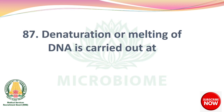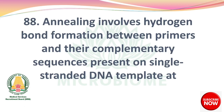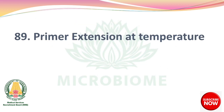Denaturation or melting of DNA is carried out at 90 to 94 degrees Celsius. Annealing involves hydrogen bond formation between the primers and their complementary sequences present on single-stranded DNA template at 50 to 65 degrees Celsius. Primer extension occurs at a temperature of 72 degrees Celsius.